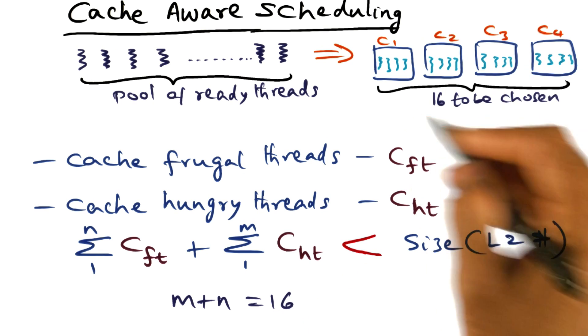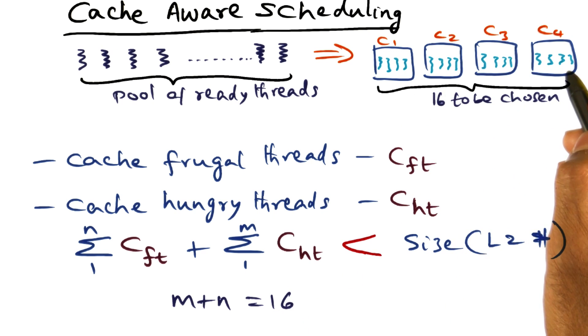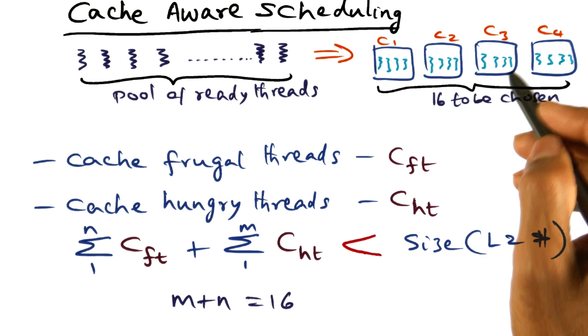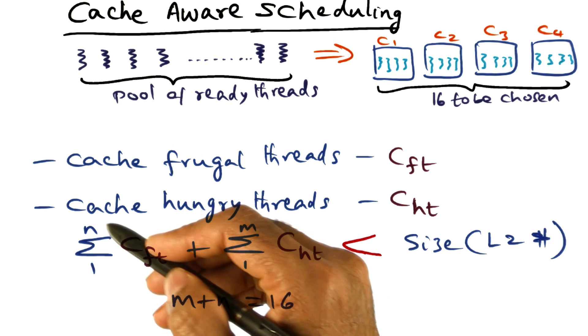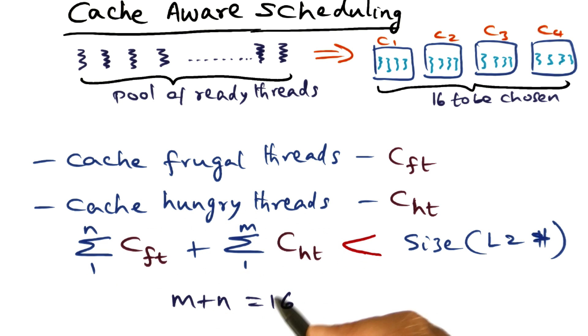In this particular case, since the total number of hardware threads that I have available to me is 16, I want to make sure that M, the cache-hungry threads, plus N, the cache-frugal threads, is 16, and this inequality is satisfied as well. So that's what we want to shoot for in picking the set of threads to run on the processor at any point of time.